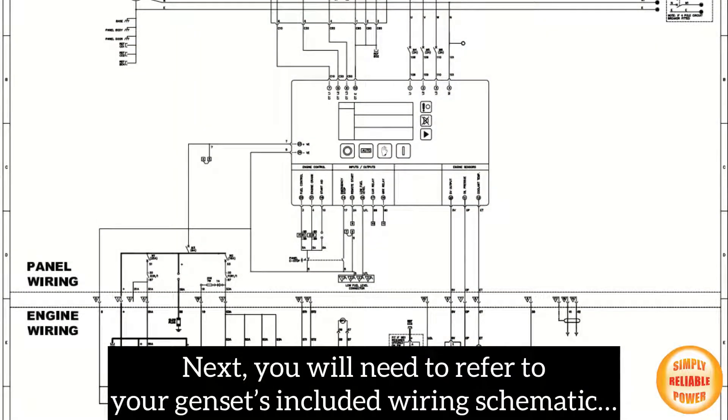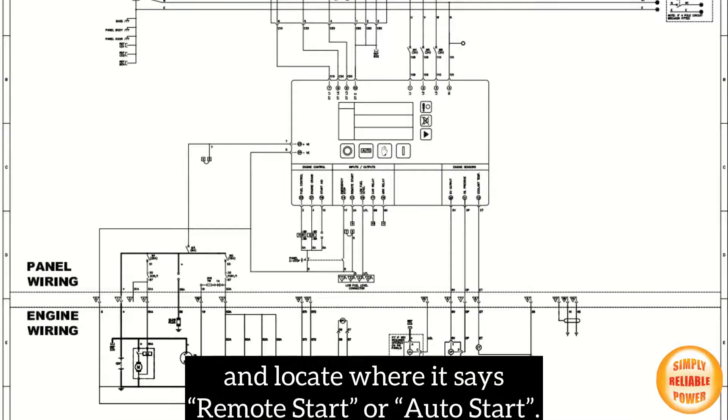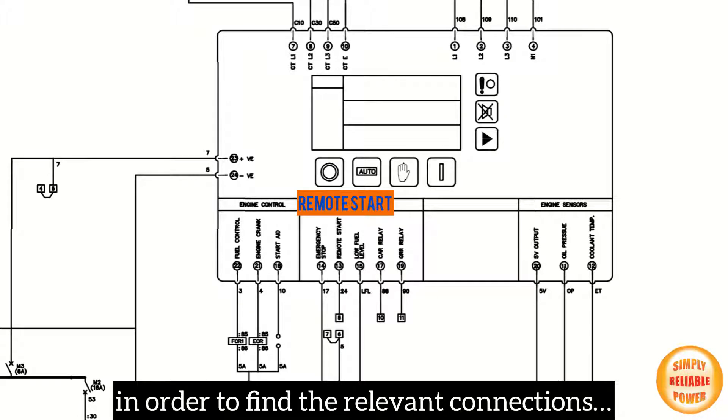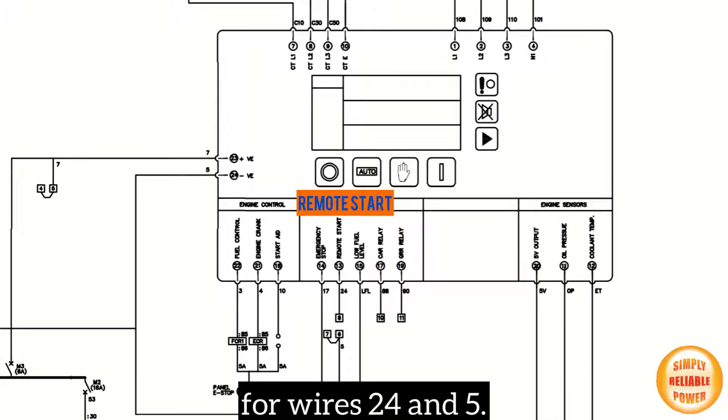Next, you will need to refer to your genset's included wiring schematic and locate where it says remote start or auto start in order to find the relevant connections for wires 24 and 5.